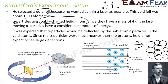He observed that most of the alpha particles went straight through, and only a few were actually deflected. This means the atoms are not dense as described in the Thomson model. There must be something — a nucleus — which has mass, and most of the atom is empty space around it.